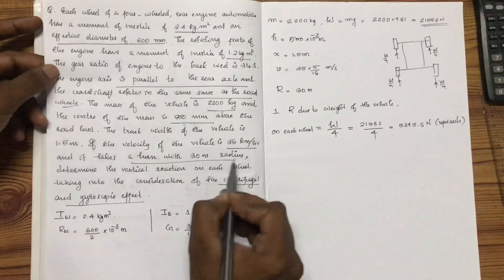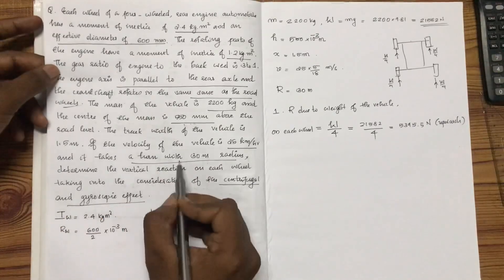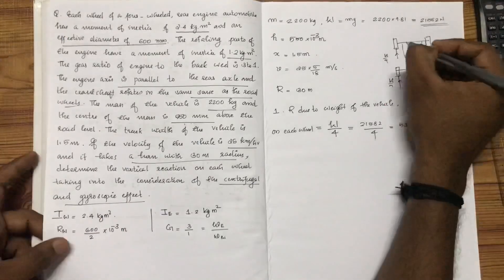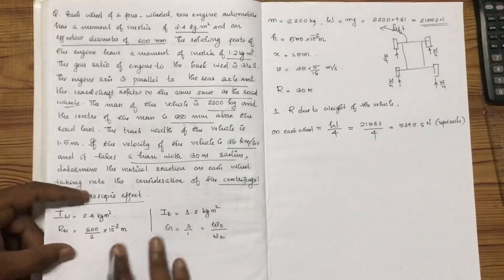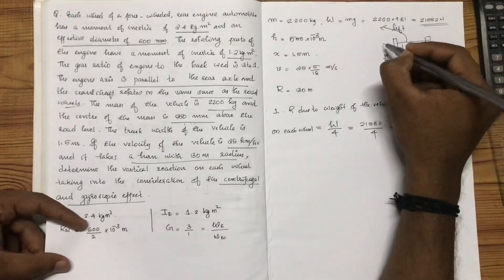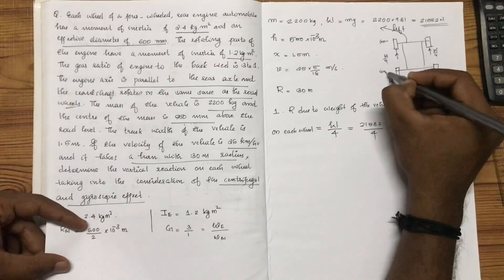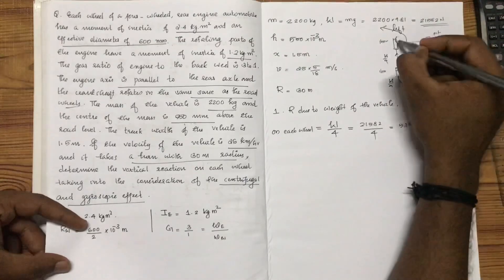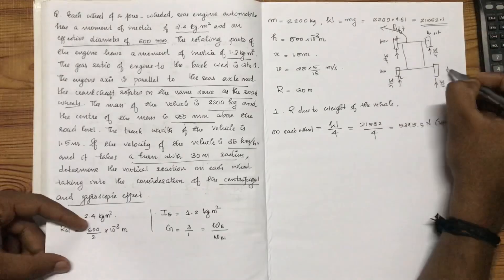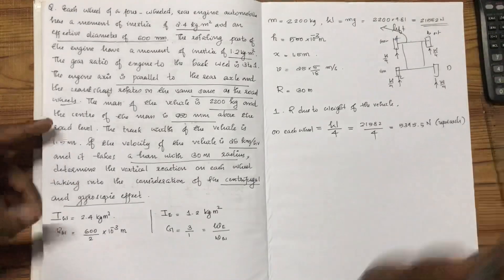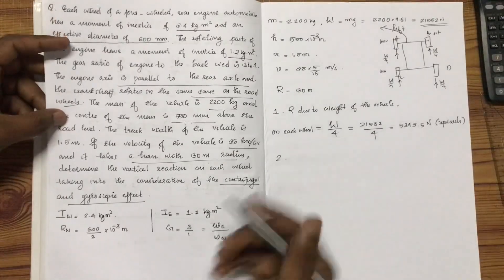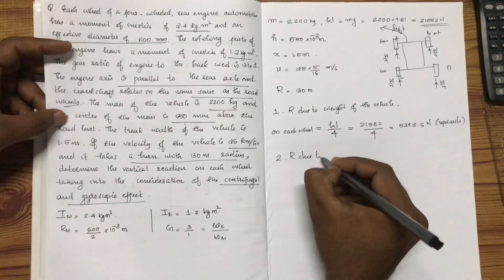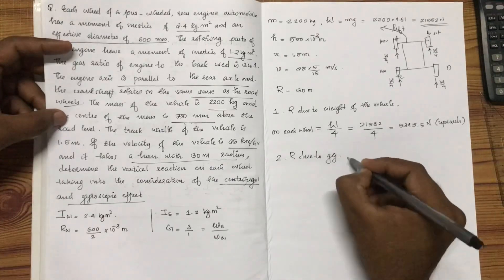The vehicle takes a turn with 30 m turning radius. When turning left, the inner wheels are on the left side and the outer wheels — A, B, C, D — are the outer wheels. This determines the direction of gyroscopic and centrifugal reactions on each set of wheels.